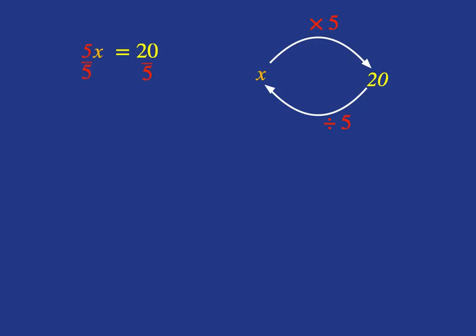5 divided by 5 is going to be 1, so you just get back to the plain x you wanted, and then 20 divided by 5 is 4, and so we have our solution to the equation.